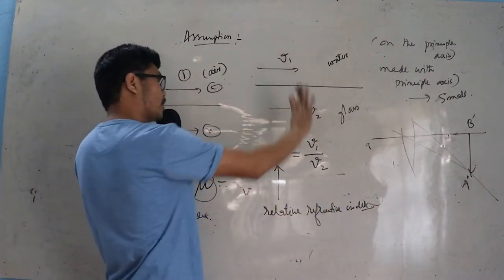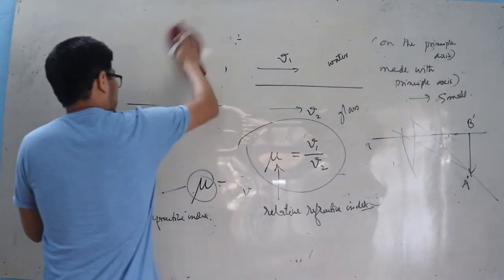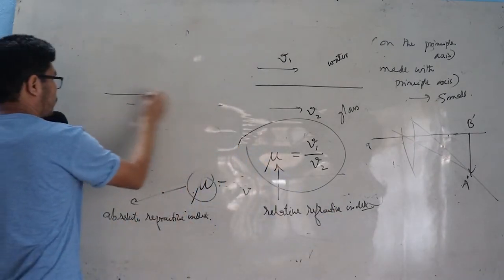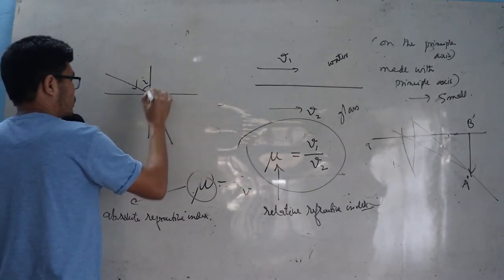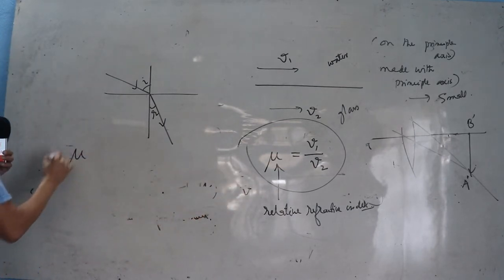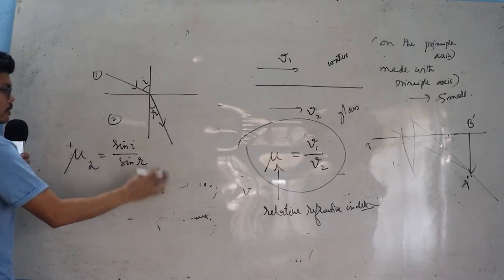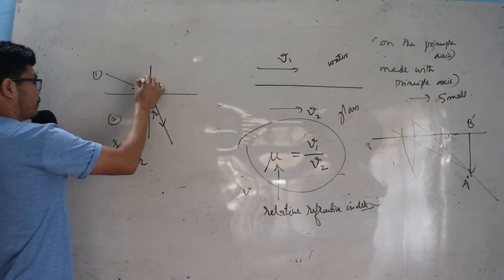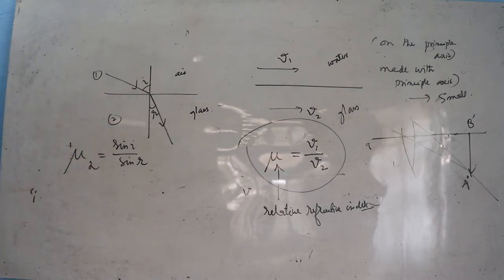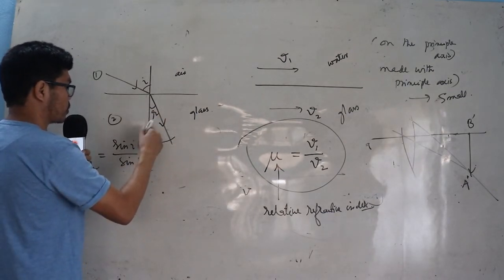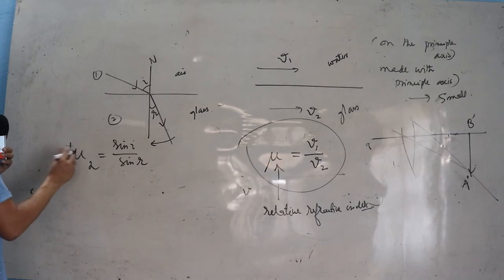If the medium is not air, you use the term relative refractive index. Now, the second point: during refraction of light, using Snell's law from medium 1 to medium 2, mu equals sine i divided by sine r. This can be written as mu2 divided by mu1 equals sine i divided by sine r.